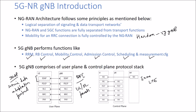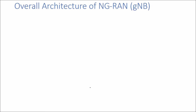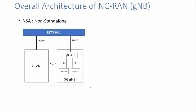That is our protocol stack for 5G NR GNodeB. Now the architecture of our NGRAN — the 5G GNodeB. We have non-standalone and standalone options. In non-standalone, we have our EPC or the 5G core as the core network, and we have our LTE NodeB and the 5G GNodeB working together, connected by the X2 or XN interface, using the S1/NG interface to connect our RAN to the 5G core.